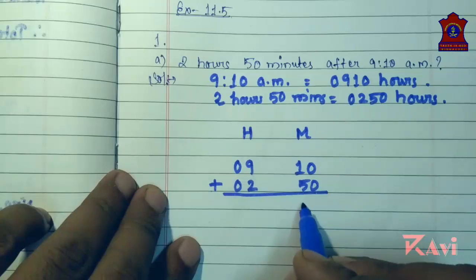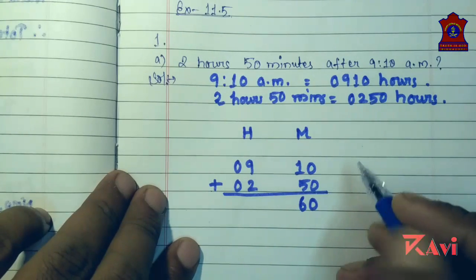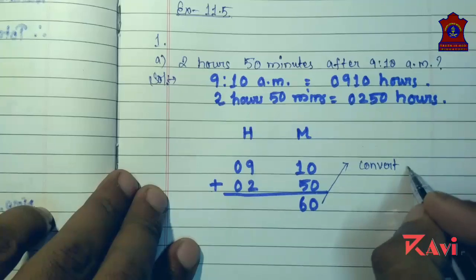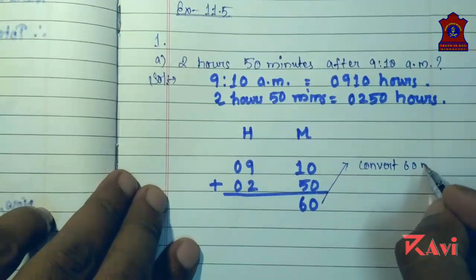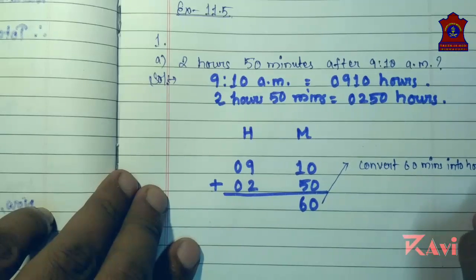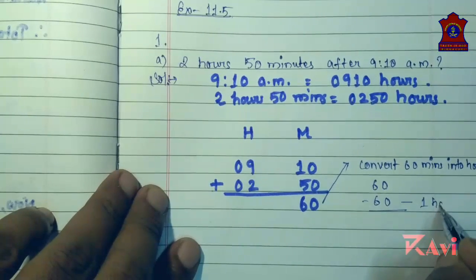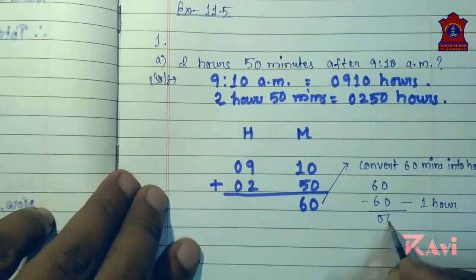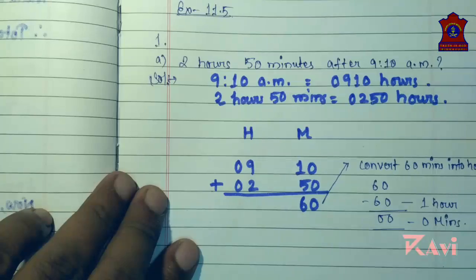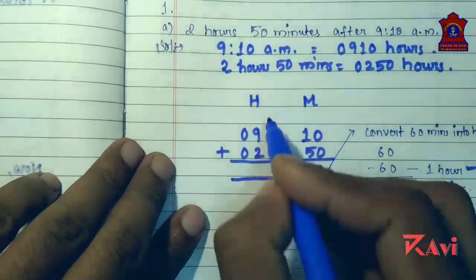See here, 50 plus 10 is 60. As I had already told you, if it is 60 or more you need to convert — convert 60 minutes into hours. So what you will be doing: 60 minus 60. This 60 is one hour, so 60 minus 60 is 0 — that gives 0 minutes. Write 0 in the minutes column and this 1 hour will be carried over.